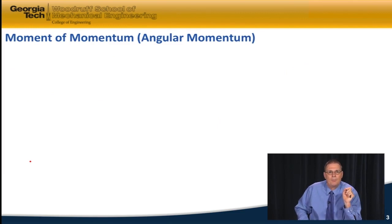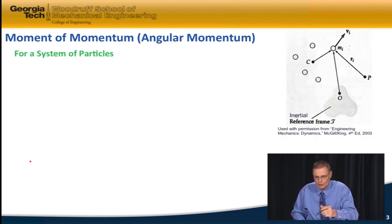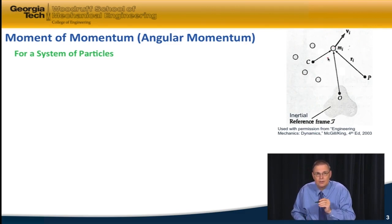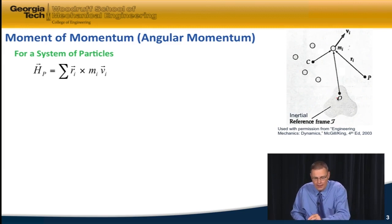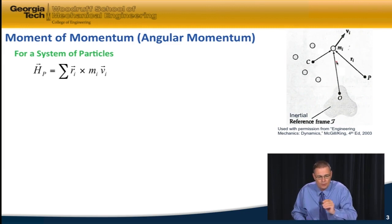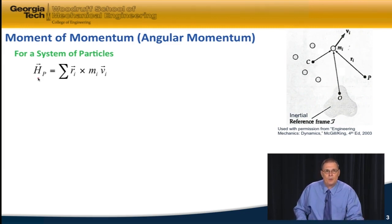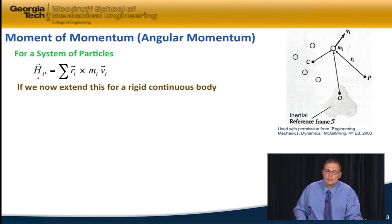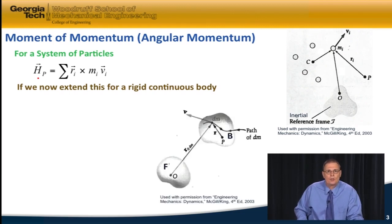Moment of momentum is also called angular momentum. If we look at a system of particles, each one of those particles has a linear momentum — mass times velocity — and if I cross the r vector with each of these linear momentums, we call that the angular momentum about point P. We can now extend this for a rigid continuous body, and we're not going to restrict it to two-dimensional motion; we're going to let it undergo three-dimensional motion.